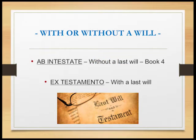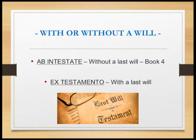With or without a will? John passes away, and question number one is: did John make a will? That will be part of the research when you're doing succession work. The law says if the person didn't execute a will, then in Book 4 we can find the rules and regulations that tell us which persons will be the heirs.